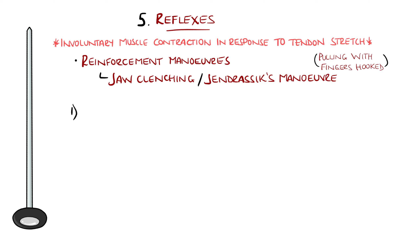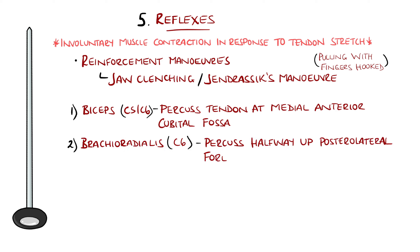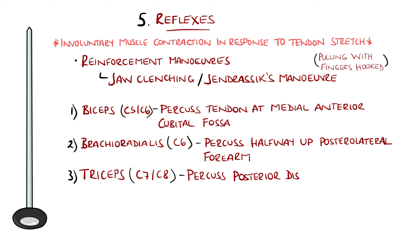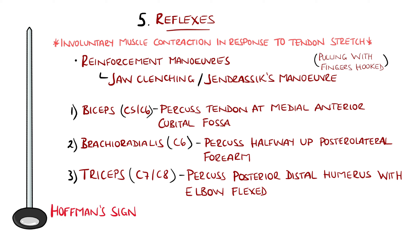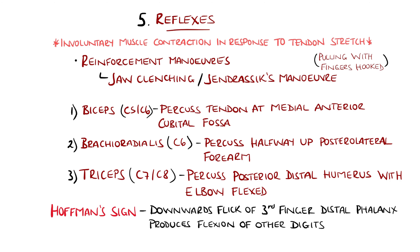The most commonly tested in the upper limb are the biceps and brachioradialis reflexes, testing C5 and C6 — elicited by percussing the medial side of the anterior cubital fossa while covering it with your thumb, and percussing halfway up the posterolateral forearm, respectively. The triceps reflex tests C7 and C8, and involves relaxing the arm with the elbow flexed and percussing the posterior aspect of the distal humerus just above the olecranon process of the ulna, observing for contraction of the triceps. Hoffman's sign is a sign of upper motor neuron lesions, indicated by flexion of the other digits when the distal phalanx of the middle finger is flicked downwards — similar to the Babinski reflex on the foot, though the mechanisms differ.